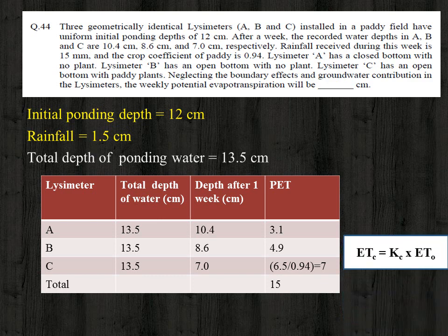Using the equation ETc = Kc × ET0, where Kc is the crop coefficient and ET0 is the potential evapotranspiration, we can find ET0 = ETc / Kc = 6.5 / 0.94 ≈ 7 centimeter. So the potential ET from lysimeter C is 7 centimeter.